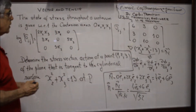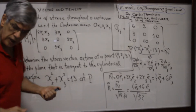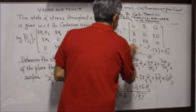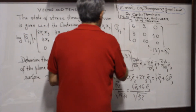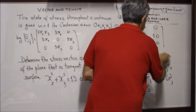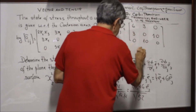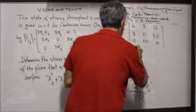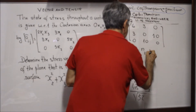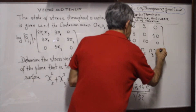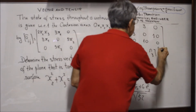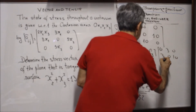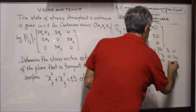To obtain the stress vector, we use T = [n1, n2, n3] times sigma_ij. The components are n1 = 0, n2 = 4/√52, n3 = 6/√52. We multiply this row vector by the stress matrix [6, 3, 0; 3, 0, 10; 0, 10, 0].